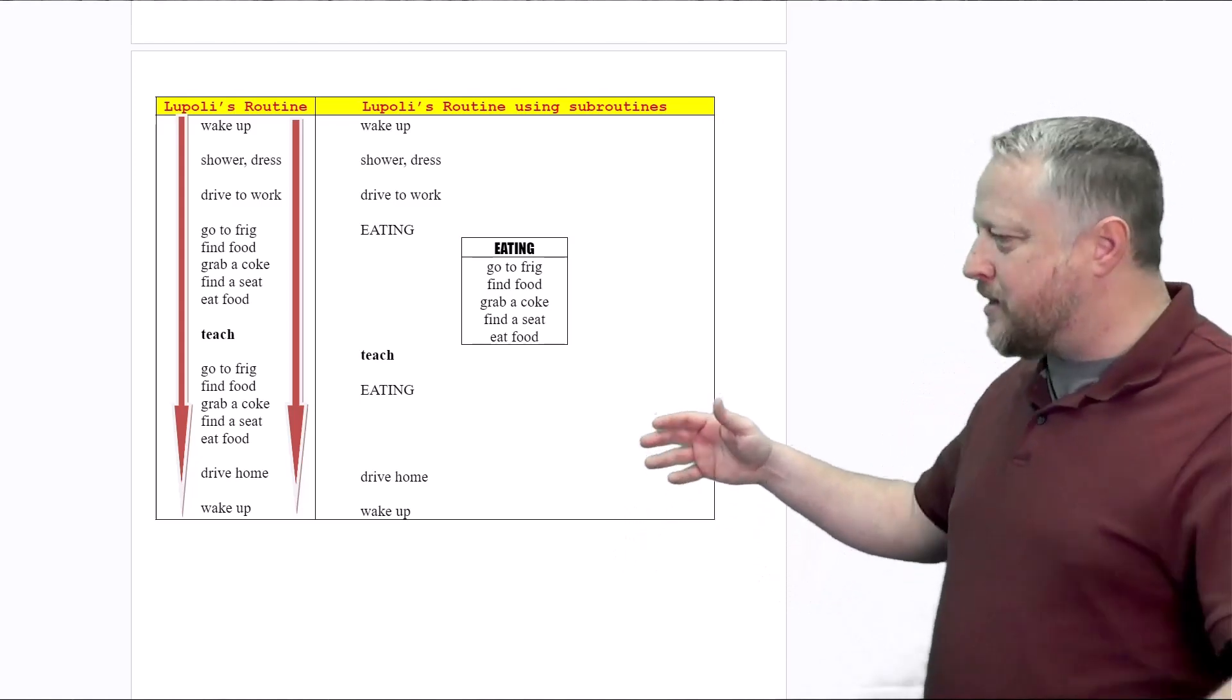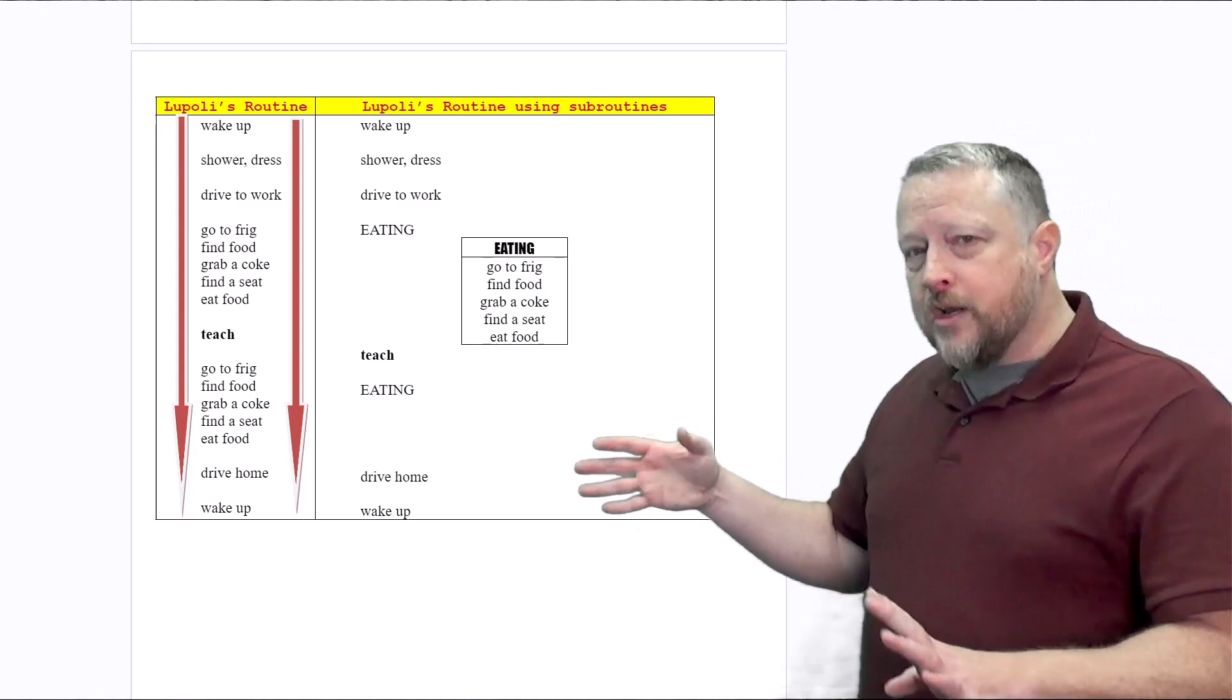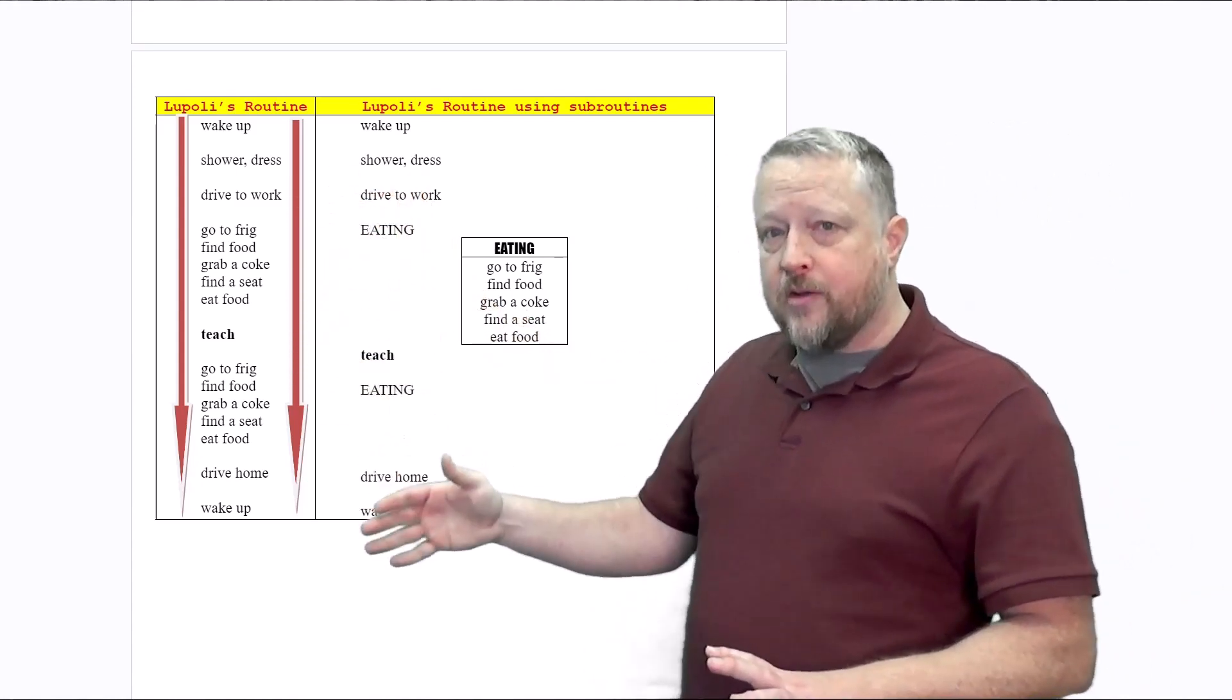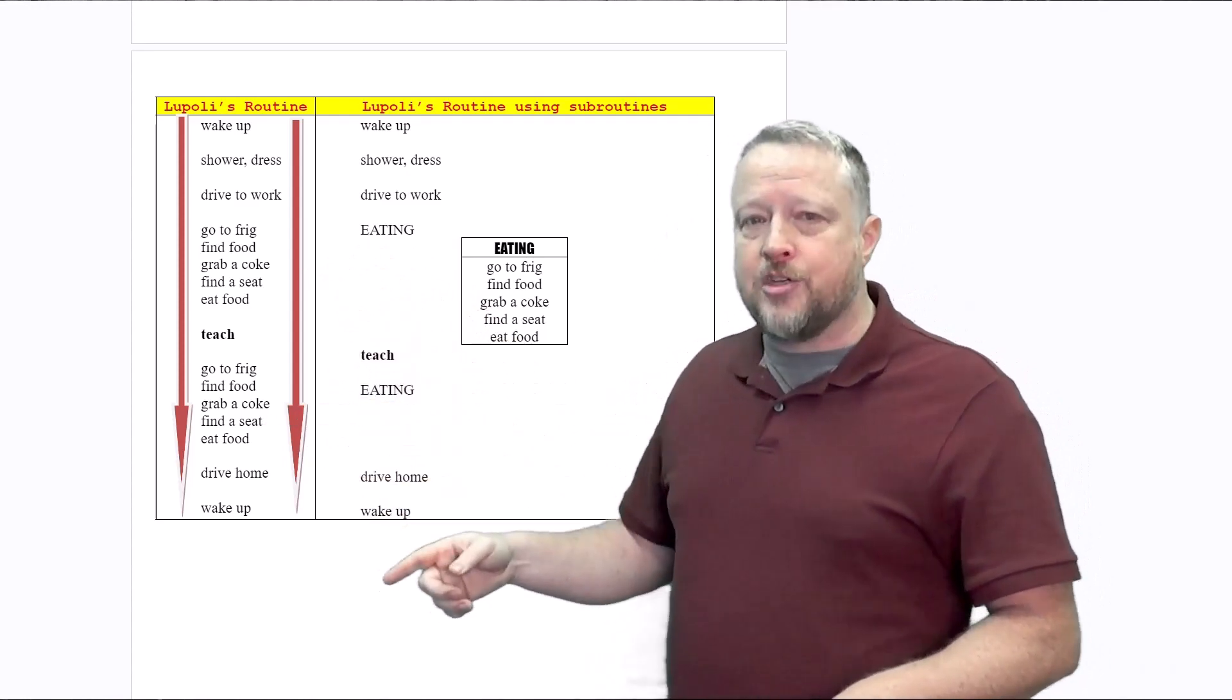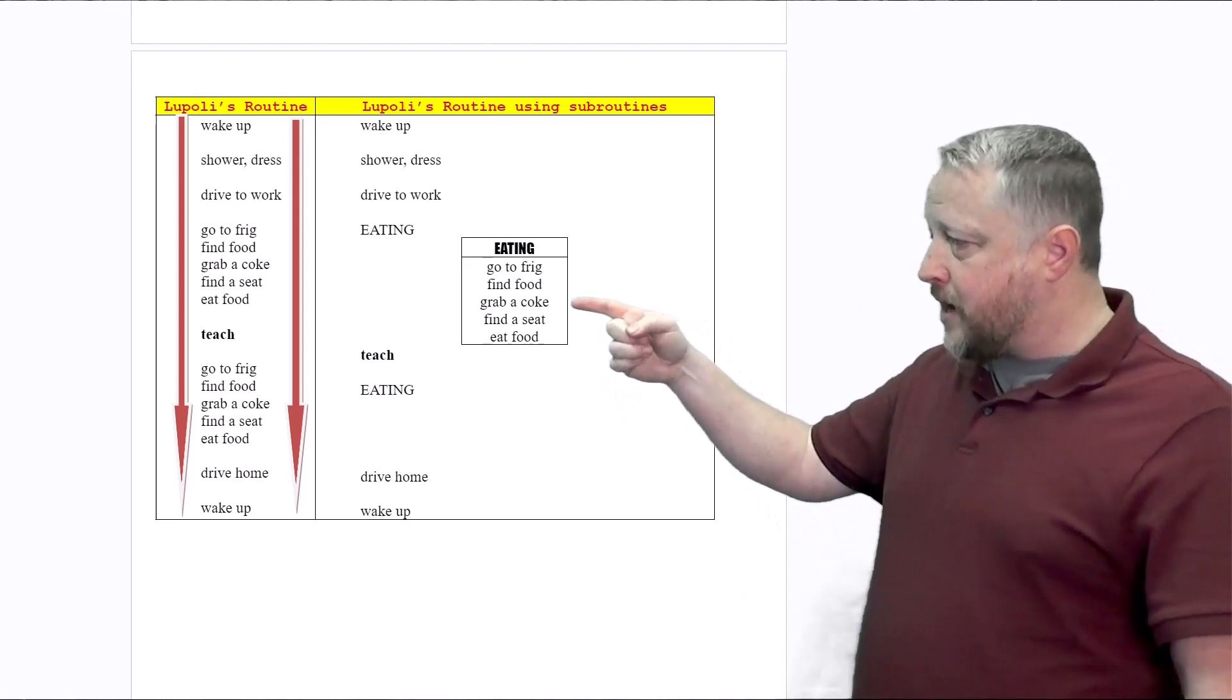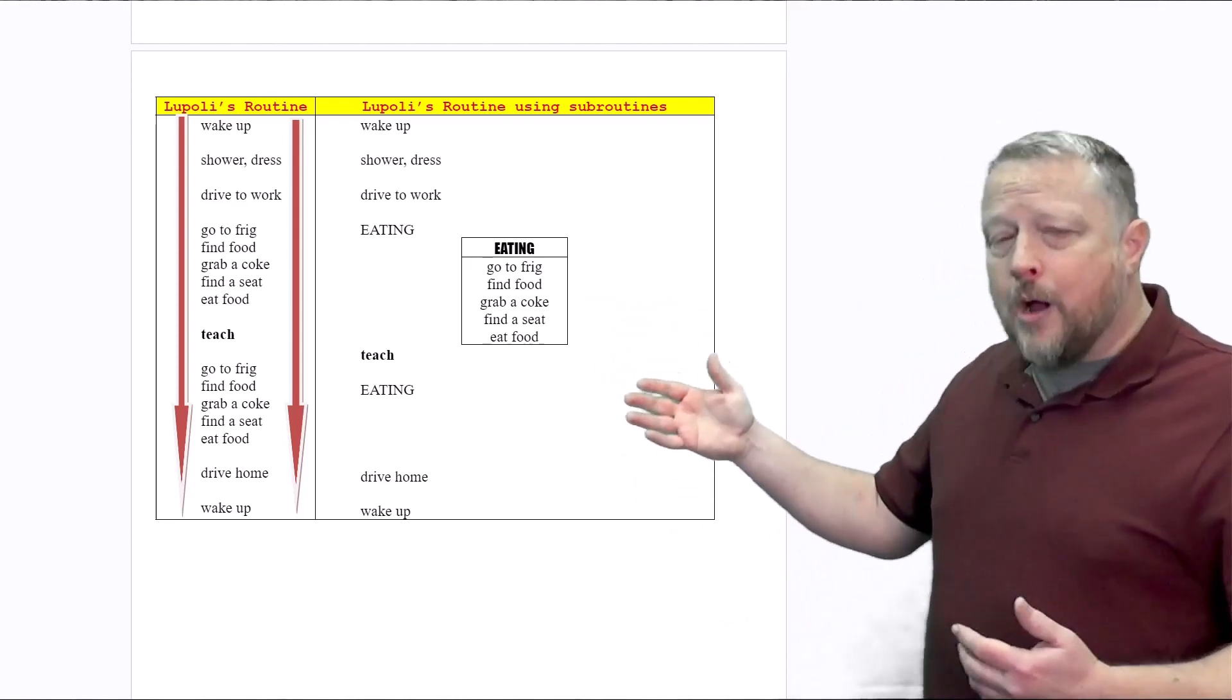What if I wanted to change one thing? If I wanted to change grabbing a coke from my normal routine where I spelled everything out in the main, I'd have to go to a couple different spots and change it. Whereas in a function, if I just wanted to do the same thing, I go to one spot, fix it, and that's it. That also helps with debugging too.